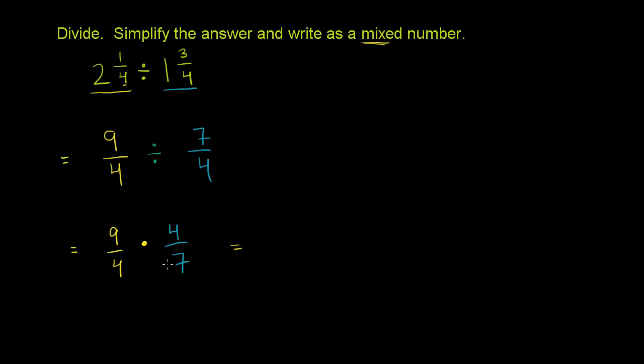Or we could do it right now, because it would be simpler. We have a 4 in the numerator. We have a 4 in the denominator, or that will eventually be in the denominator. So let's divide our eventual numerators and our eventual denominators both by 4. So you divide this 4 by 4, you get 1. This 4 by 4, you get 1. So now when you multiply it, you get 9 times 1, which is 9, over 1 times 7, which is 7.